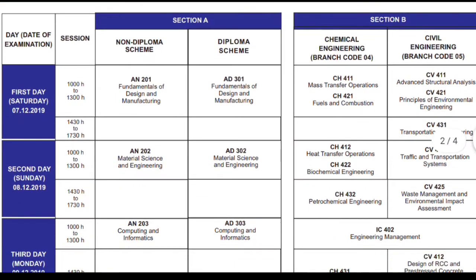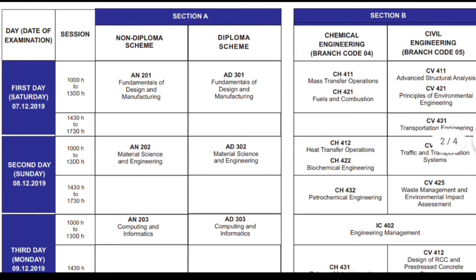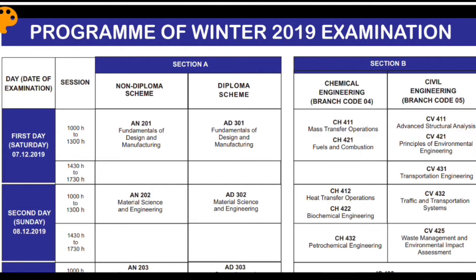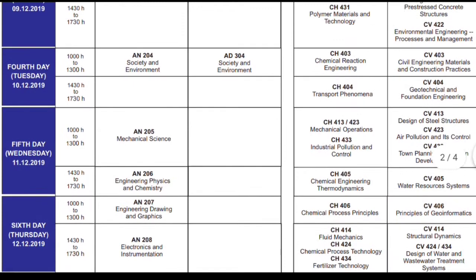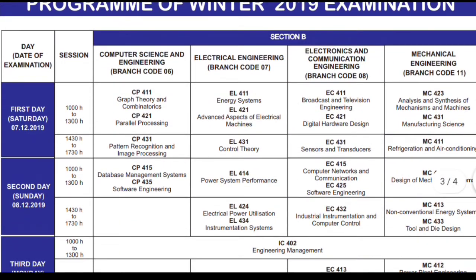On 7th December, the Day 1 exam for non-diploma and diploma students was Fundamentals of Design and Manufacturing. For Section B, Chemical Engineering students had Mass Transfer Operation, Fuel and Combustion. Civil Engineering students had Advanced Structural Analysis and Principles of Environmental Engineering. For Computer Science, the subjects were Graph Theory, Parallel Processing, Pattern Recognition, and Image Processing.